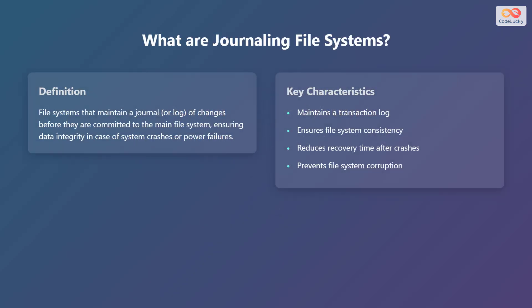So what exactly are journaling file systems? Essentially, they are file systems that maintain a journal, also known as a log of changes. These changes are recorded before they are actually committed to the main file system. This process is crucial for ensuring data integrity, especially in the event of system crashes or power failures.